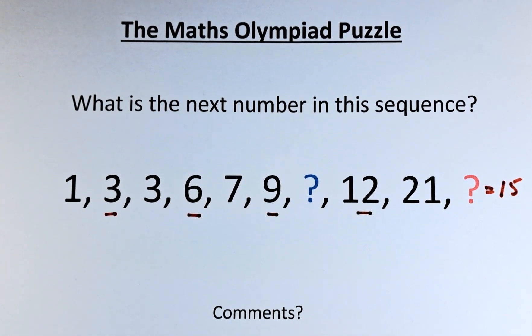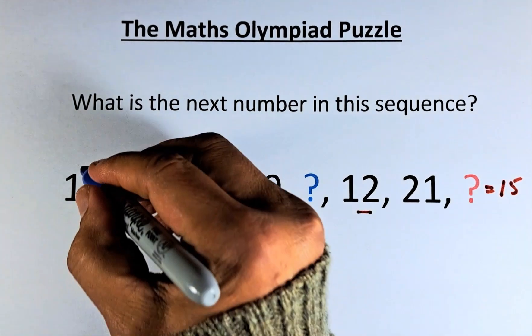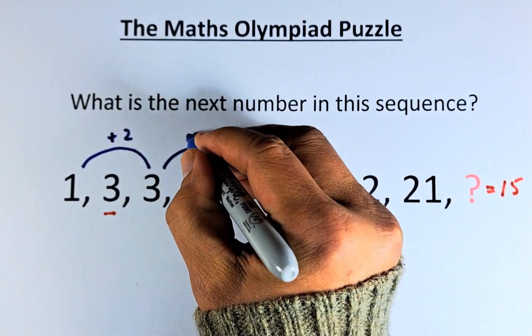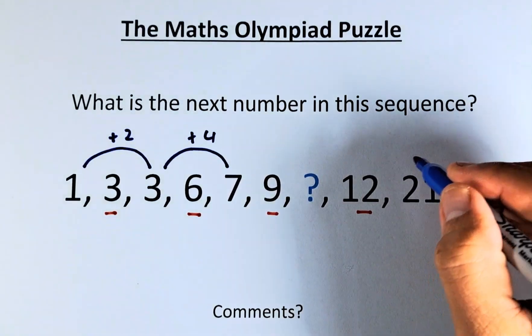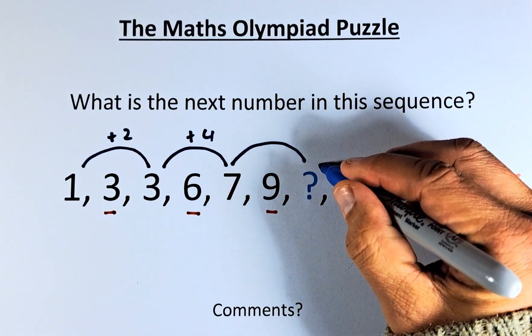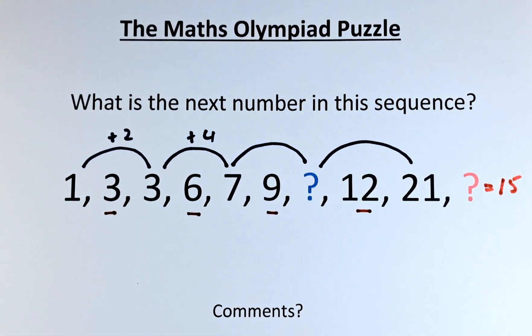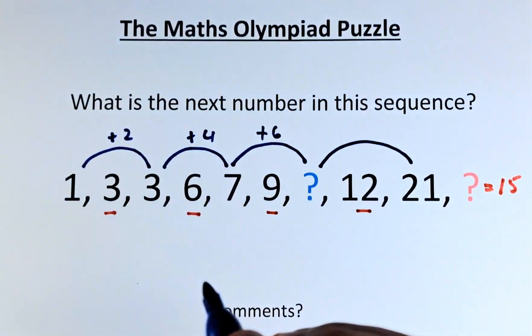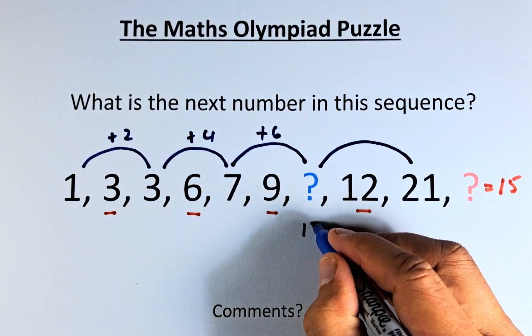So what about the blue question mark? From 1 to 3, you plus 2. 3 to 7, you plus 4. And then 7 to the blue question mark, we're going to plus 6. So 7 plus 6, the question mark is going to be 13.